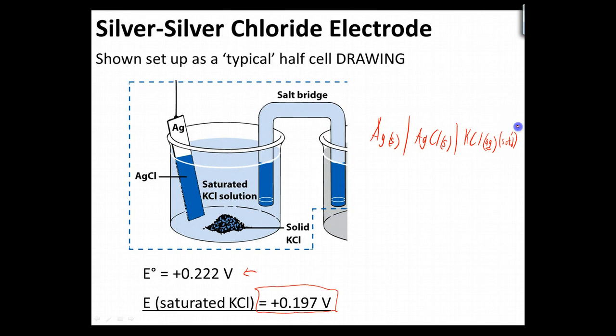Now one thing I was omitting over here, I need a salt bridge to connect that to whatever my other half cell would be. So that's how we would go through our whole silver silver chloride electrode using our normal notations. Our beaker diagram we'll call this and our line notation. Let's see what that actually looks like experimentally.